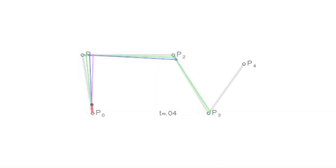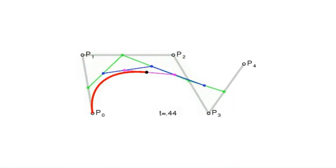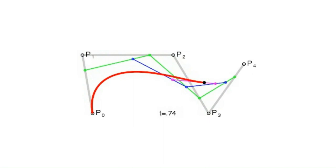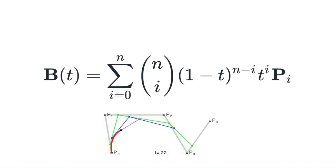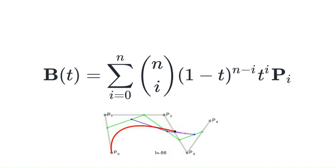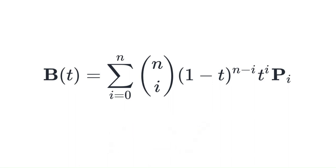The most common Bezier curves are cubic Bezier curves, which are defined by four control points. To generate a Bezier curve, a series of intermediate points are calculated between the control points. These intermediate points are then used to connect the control points, creating a smooth, continuous curve. The generic definition of a point in the Bezier curve is as shown in the equation, where t is a parameter that ranges from zero to one, often referred to as the parameter of the curve. When t equals zero, the Bezier curve evaluates to the starting point defined by the first control point P-0. When t equals one, the curve evaluates to the ending point defined by the last control point P-N.